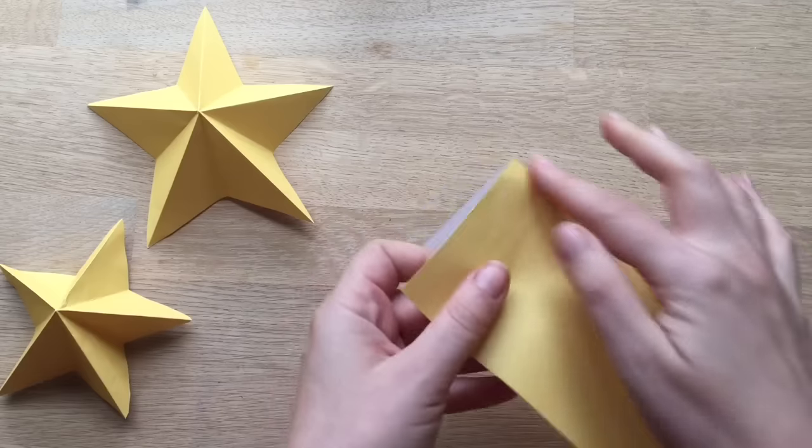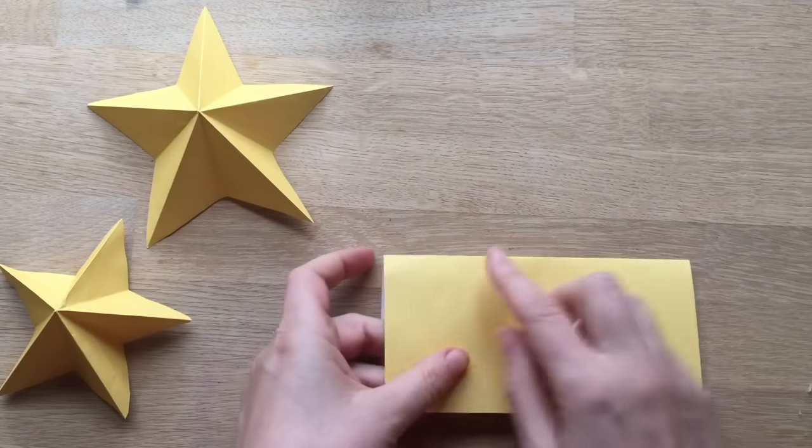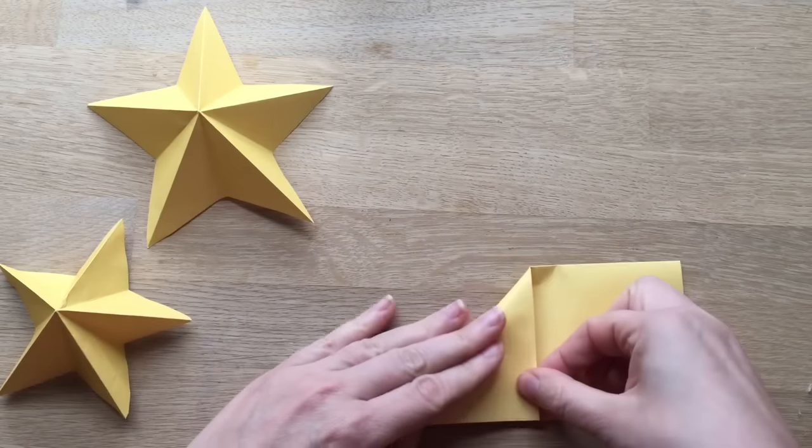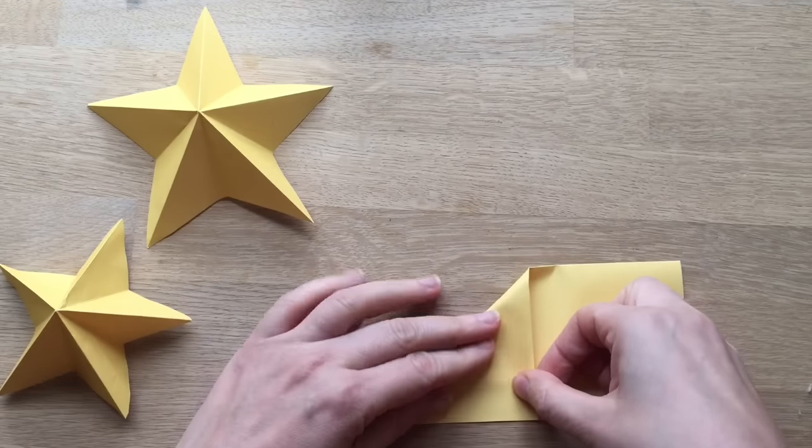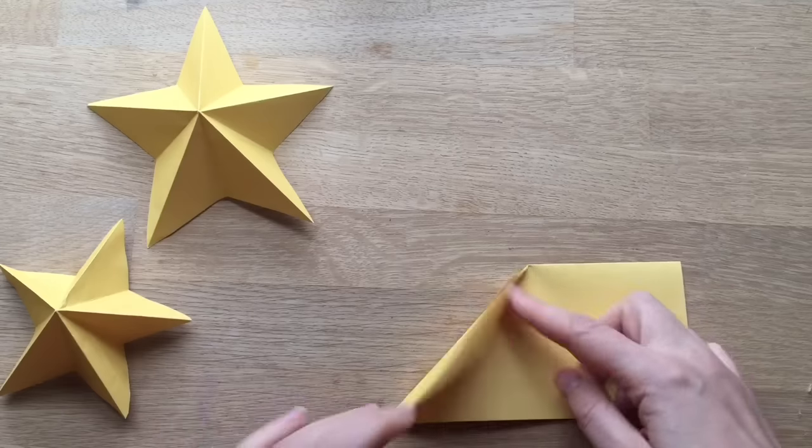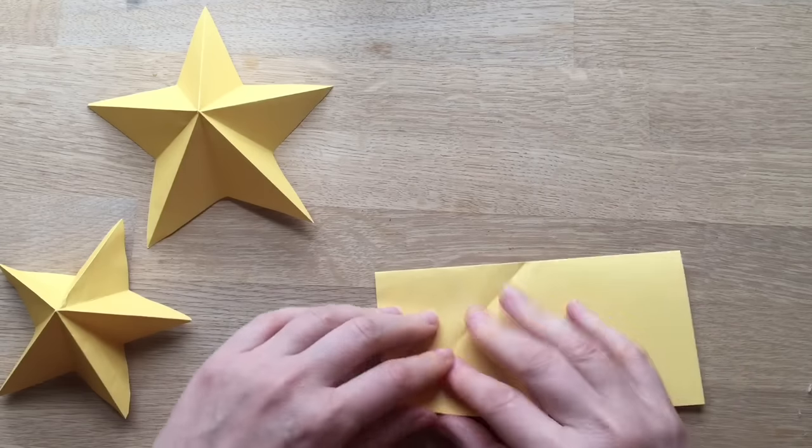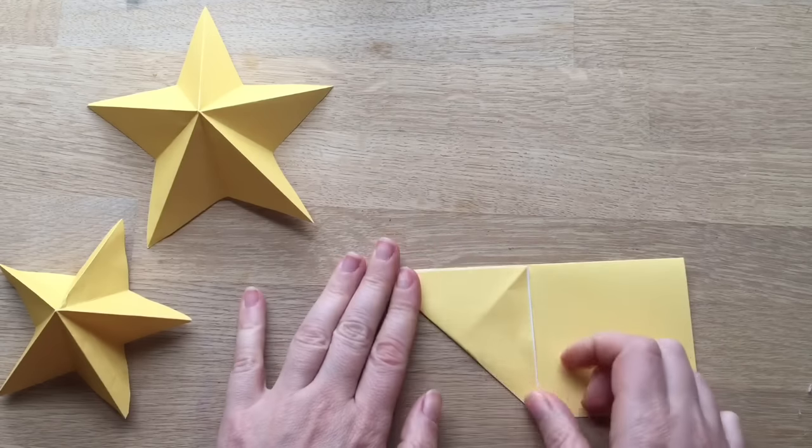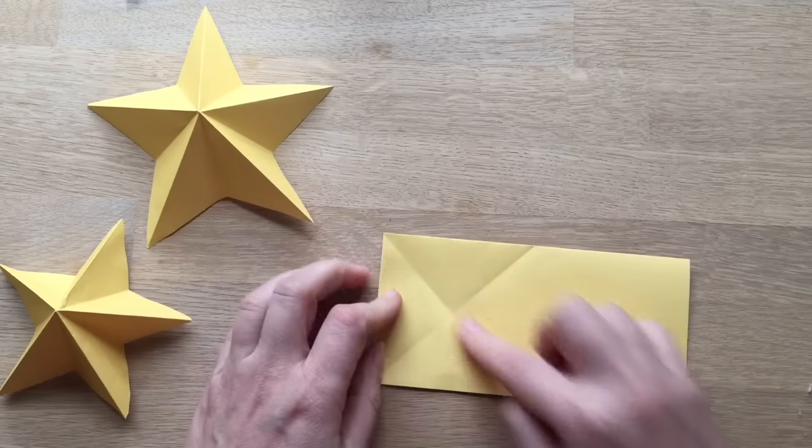So now you've got your fold here. I'm going to turn it around and then we take this corner down. Now take this corner and fold it up so you've got this parallel line. That creates a cross and there's a center.